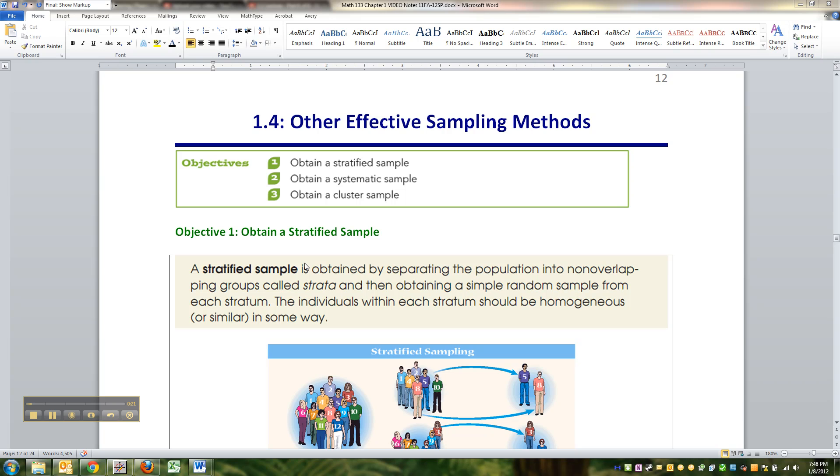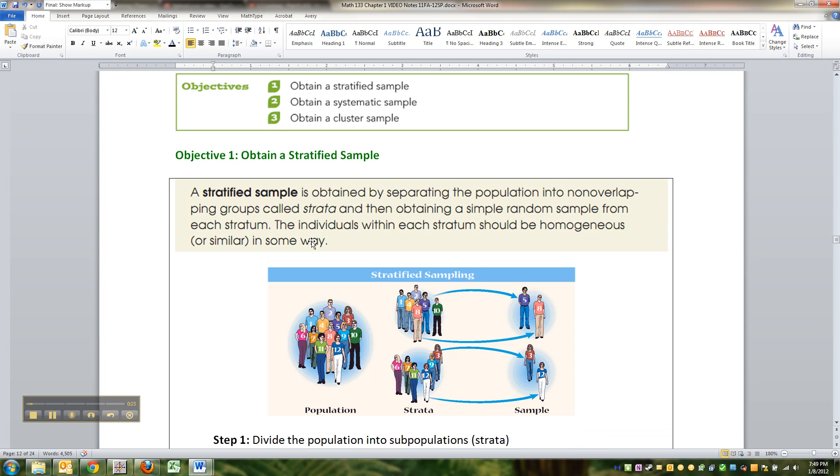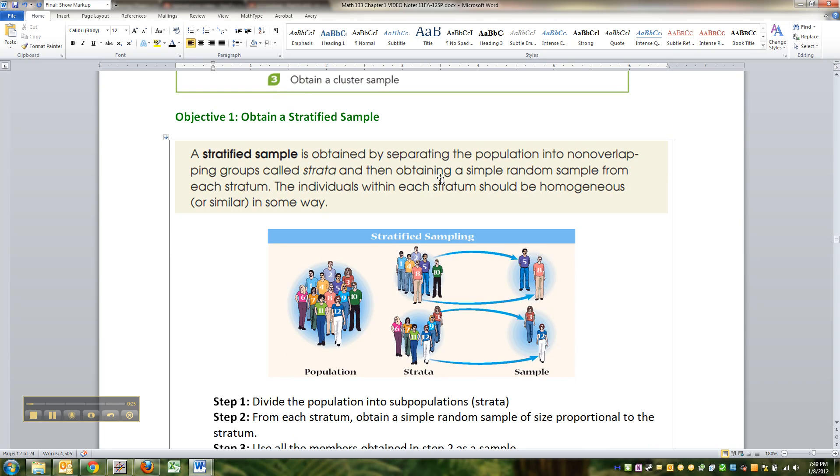Alright, so the first of those is called a stratified sample. It's obtained by separating the population into non-overlapping groups called strata, and then obtaining a simple random sample from each stratum. The individuals within each stratum should be homogeneous or similar in some way.